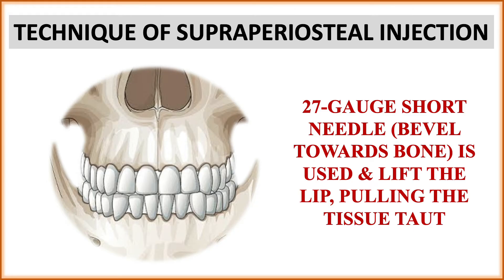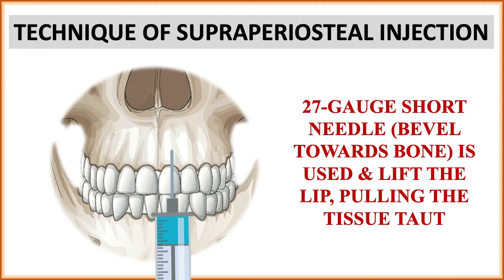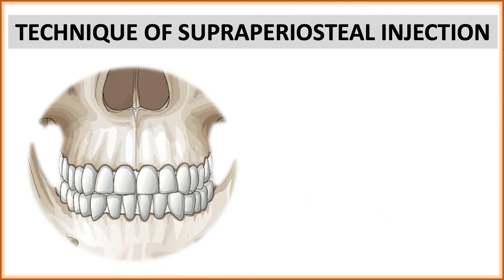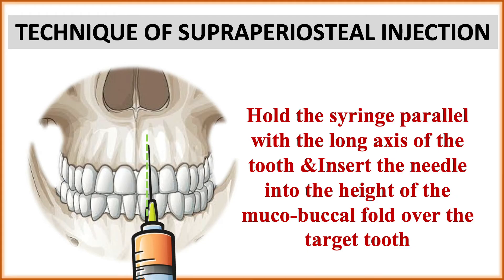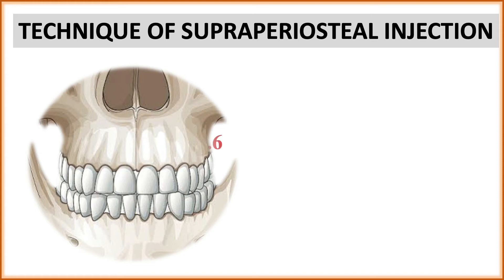After applying topical anesthetic, use a 27-gauge short needle and lift and pull the lip to make the tissue taut. Note: the bevel must be towards the bone — if the bevel is away from the bone, that is incorrect. Hold the syringe parallel with the long axis of the tooth and insert the needle into the height of the mucobuccal fold over the target tooth, so that you can reach the apex of the tooth.